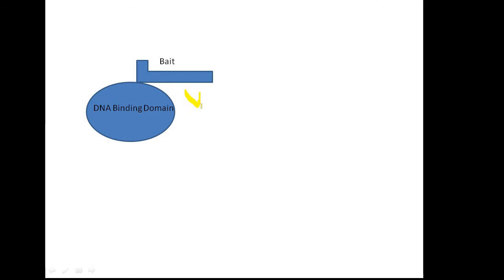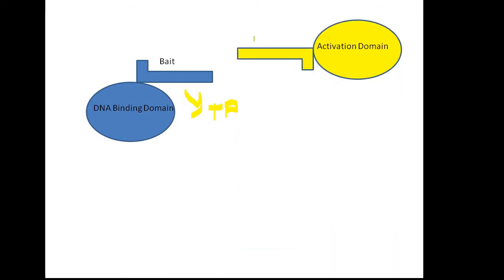A DNA binding domain, which binds to the upstream activator sequence, is fused to one of the target proteins — also known as bait — whose interaction we want to study. An activation domain is tagged to the potential interacting protein, also known as prey, which may interact with the target protein.